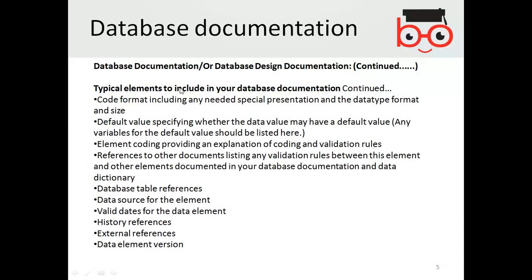Additional documentation elements include code format, default values, element coding, references to other documents, database table references, sources of elements, valid dates, history references, external references, and data element version. These are highly technical terms, but they represent the key concepts you will find in specific implemented database documentation.